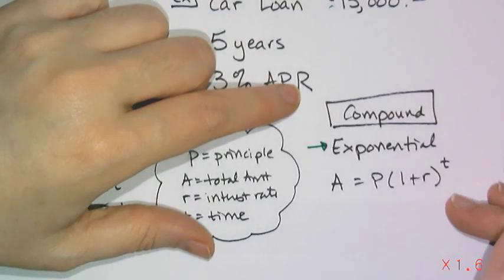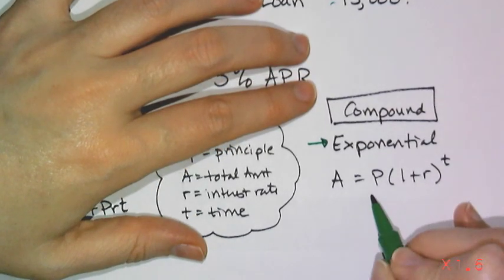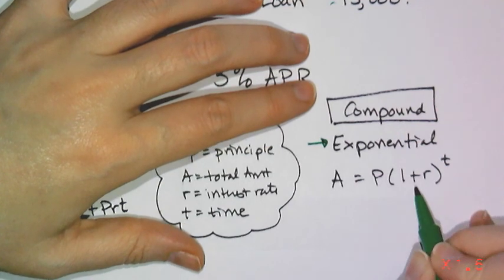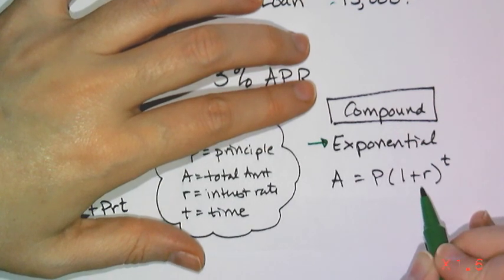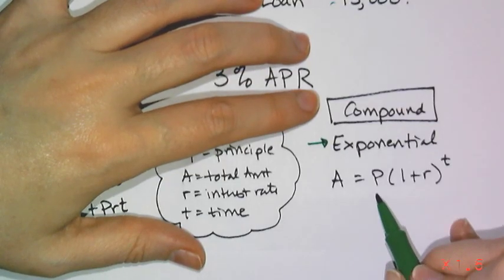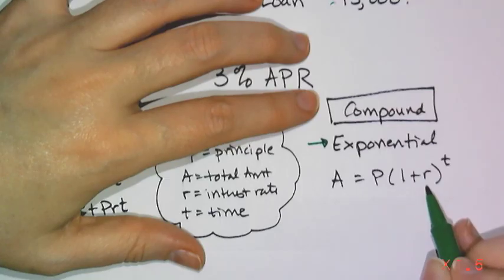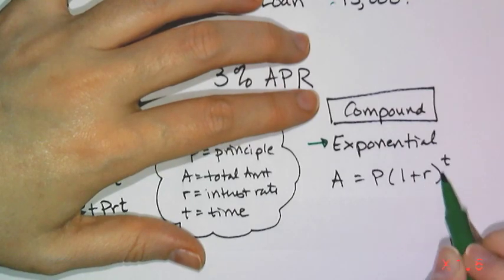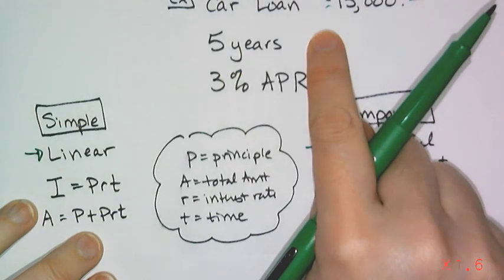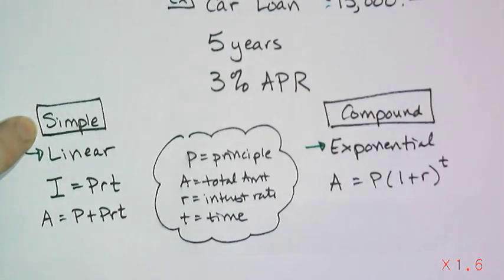Compound interest is exponential because it grows from the original amount plus whatever interest you had before. This is the standard exponential growth equation where r is the rate of increase. The formula is: A equals principal times (1 plus rate) raised to the t power, where the rate must be converted to a decimal first.